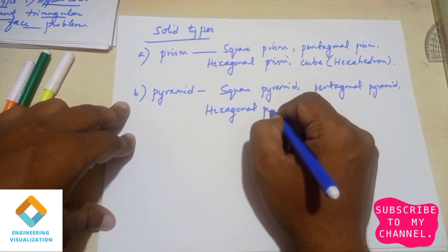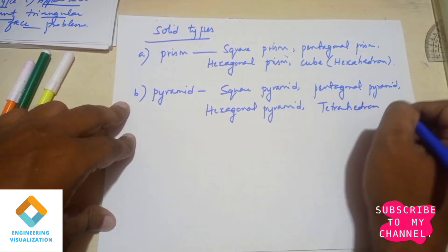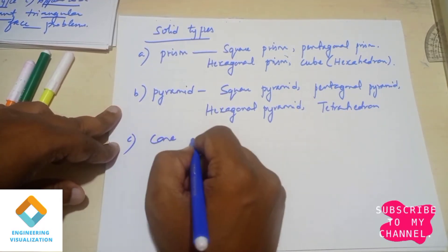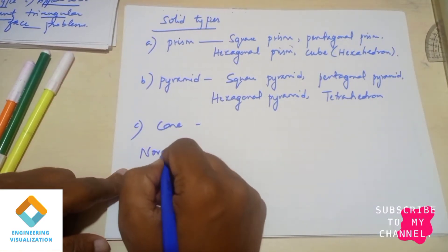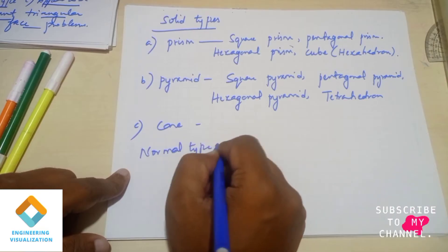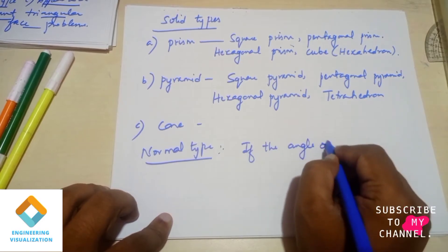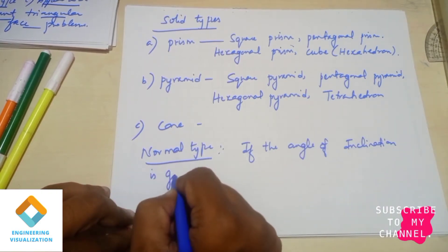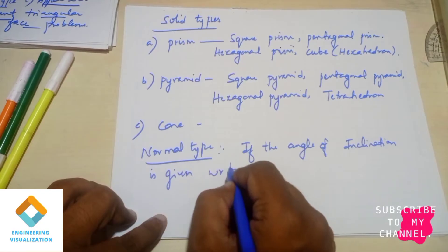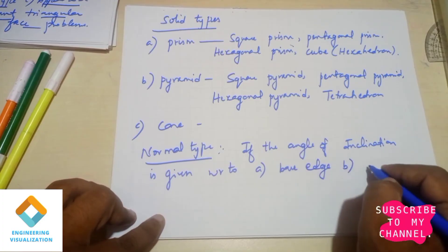Subscribe to our channel and share with your friends and classmates — it can be helpful for them in exams or internals. Next, the third type of solid is cone. Normal type problem, solid concept same. Angle of inclination with respect to HP and VP — that is the node. Angle of inclination: base edge, axis — normal type: base edge, axis.